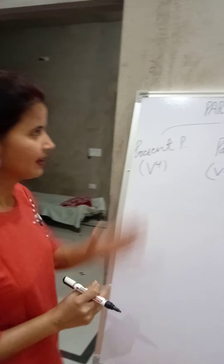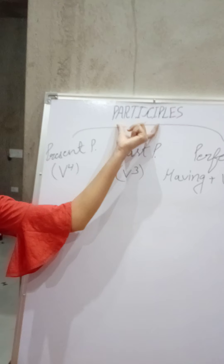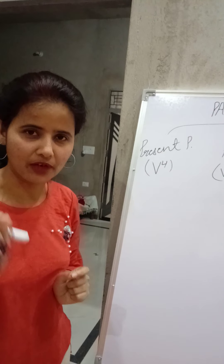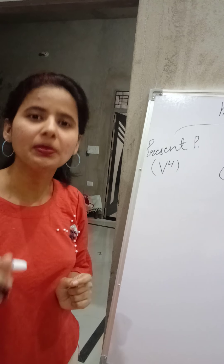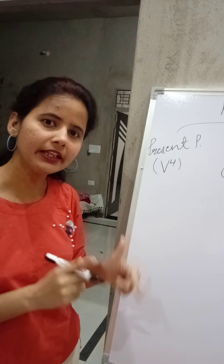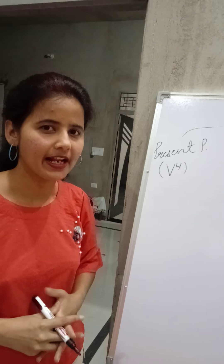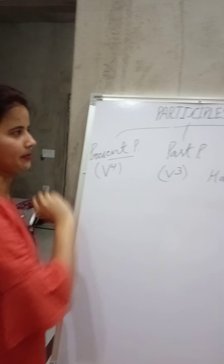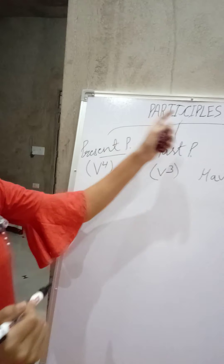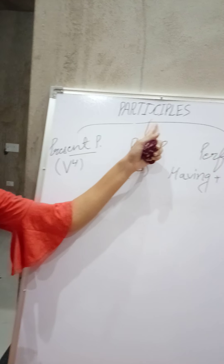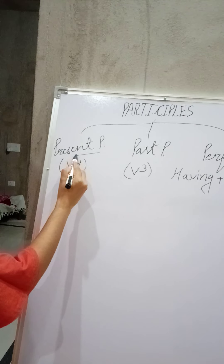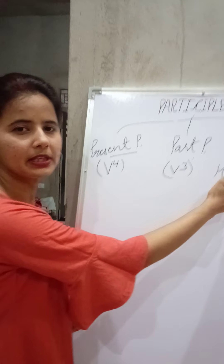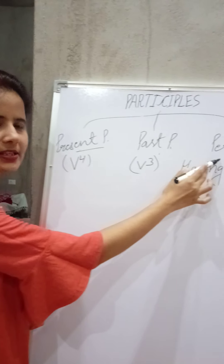So let's get started. Participle is a non-finite form. It may be used adverbially or as an adjective. There are three types of participles. The first type is present participle, the second type is past participle, and the third type is perfect participle.